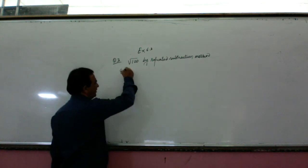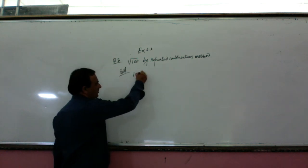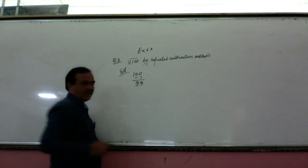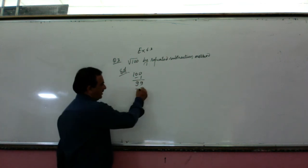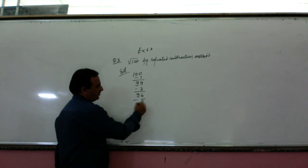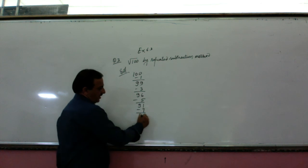This is repeated subtraction method. So first is 100. First odd number, subtract 1 is 96. Again subtract 3 is 96. Subtract 5 is 91. Subtract 7 is 84. Subtract 9 will be 75.